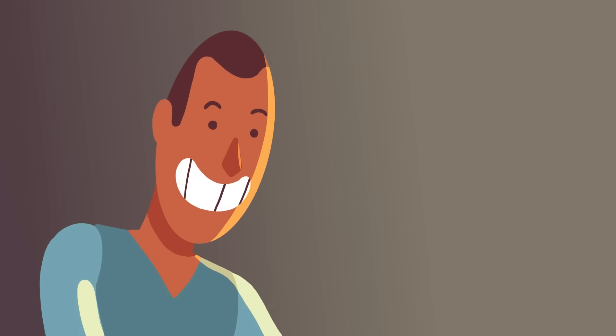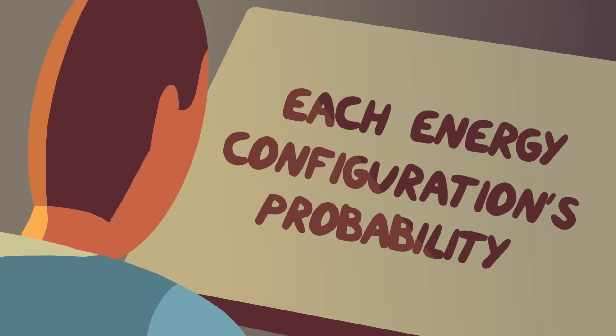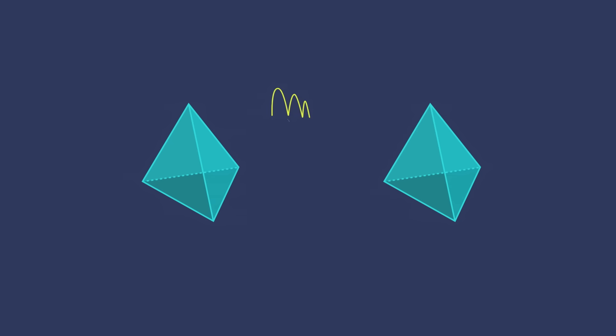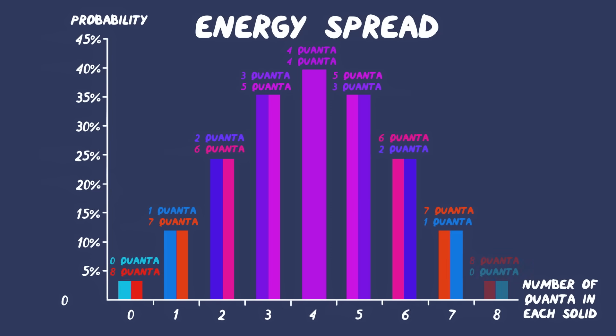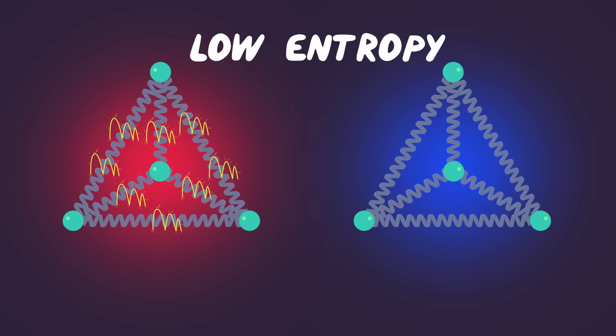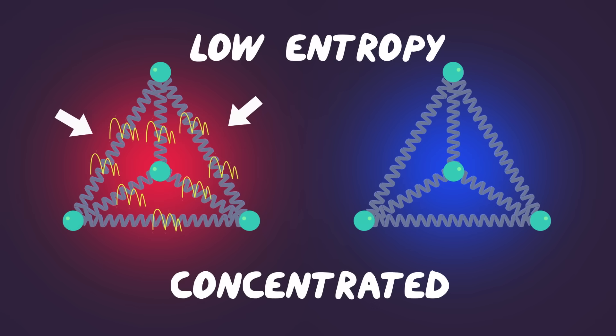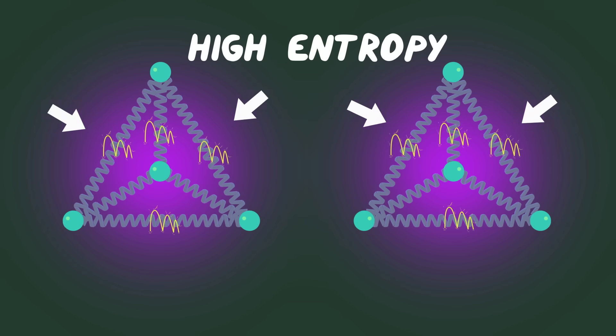Entropy is a direct measure of each energy configuration's probability. What we see is that the energy configuration in which the energy is most spread out between the solids has the highest entropy. So in a general sense, entropy can be thought of as a measurement of this energy spread. Low entropy means the energy is concentrated. High entropy means it's spread out.